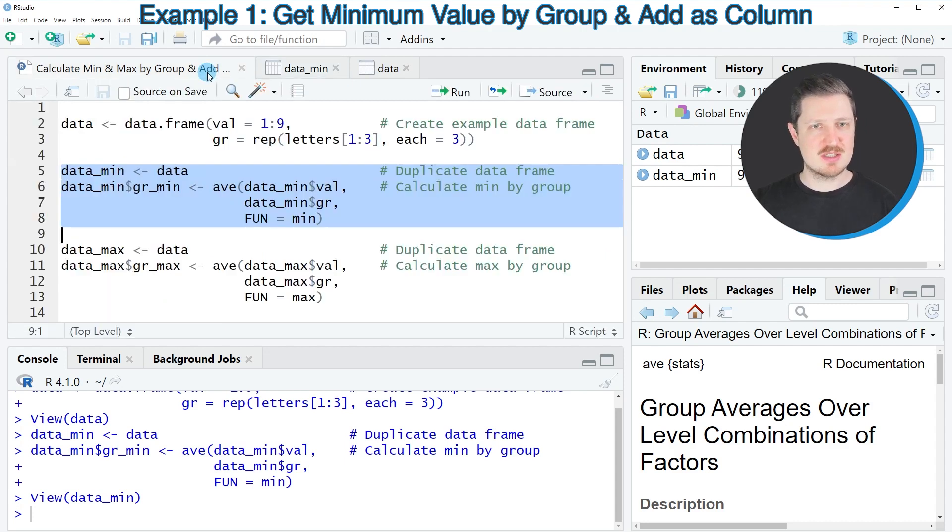So in this first example I have explained how to calculate the minimum value by group and how to add this value as a new column.